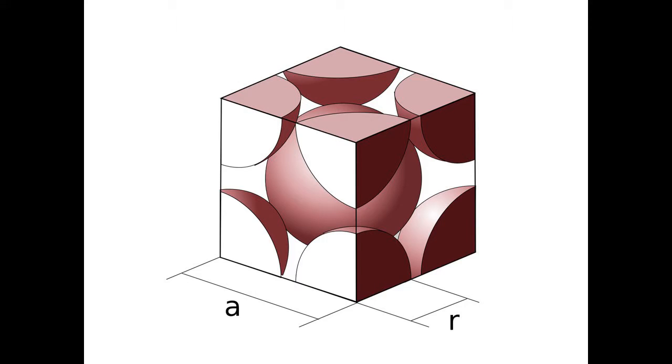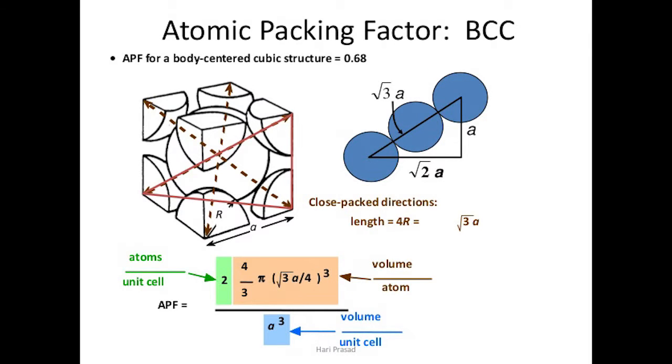Atomic packing factor. APF is how efficiently atoms are packed together. Pertaining to unit cells is the fraction of the cell that is filled with atoms. In its simplest form, the equation for APF, atomic packing factor, is equal to the volume of atoms in a unit cell divided by the volume of the unit cell itself.